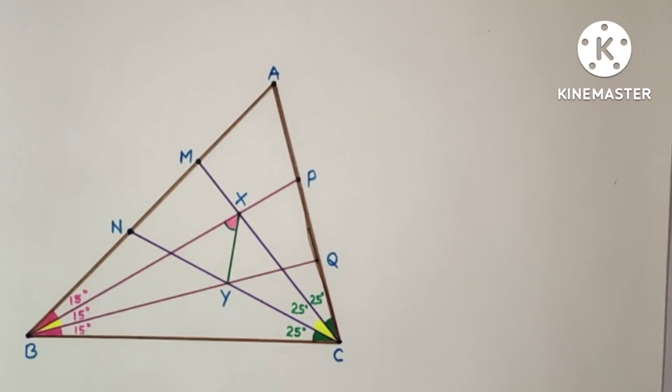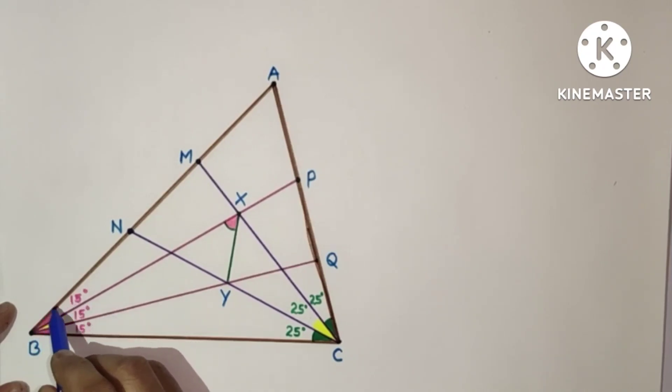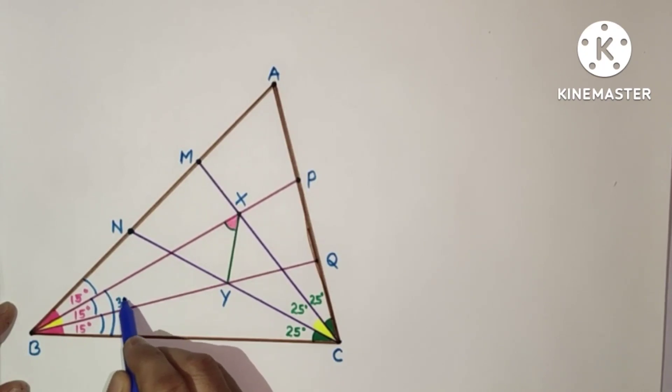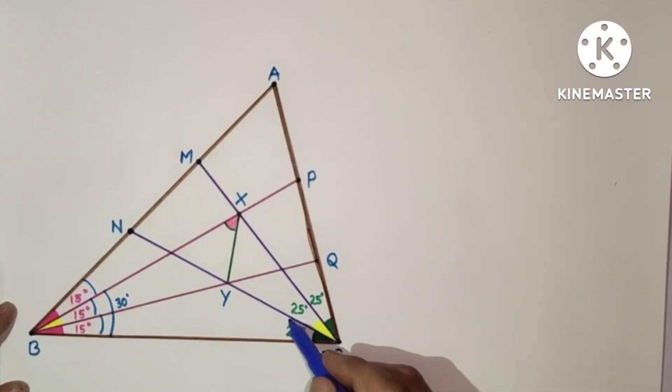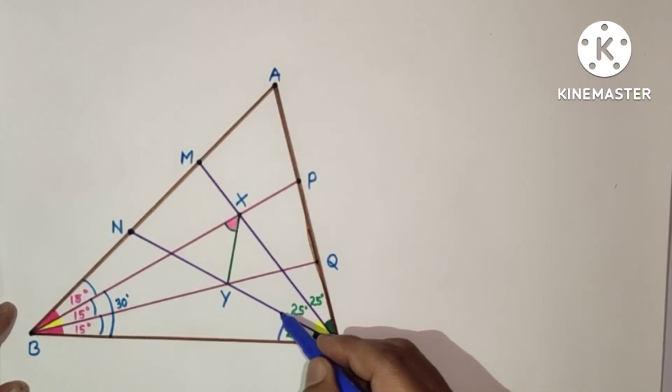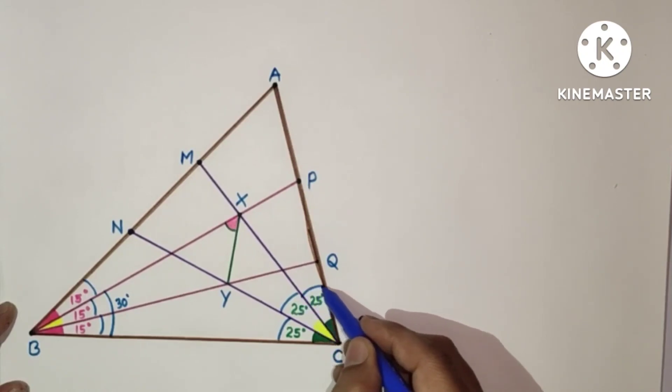So here is the diagram. This angle C is trisected since this angle is 45, so each will be 15, 15, 15, and this angle will be 30 degrees. This angle is 75 and this angle is trisected, so each will be 25, 25, and 25 degrees.